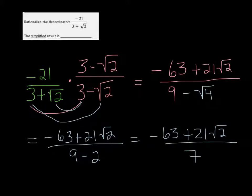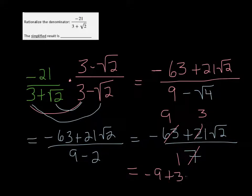Now the problem is that 63, 21, and 7 are all divisible by 7. So we're going to divide them by 7, and we get negative 9 plus 3 root 2.